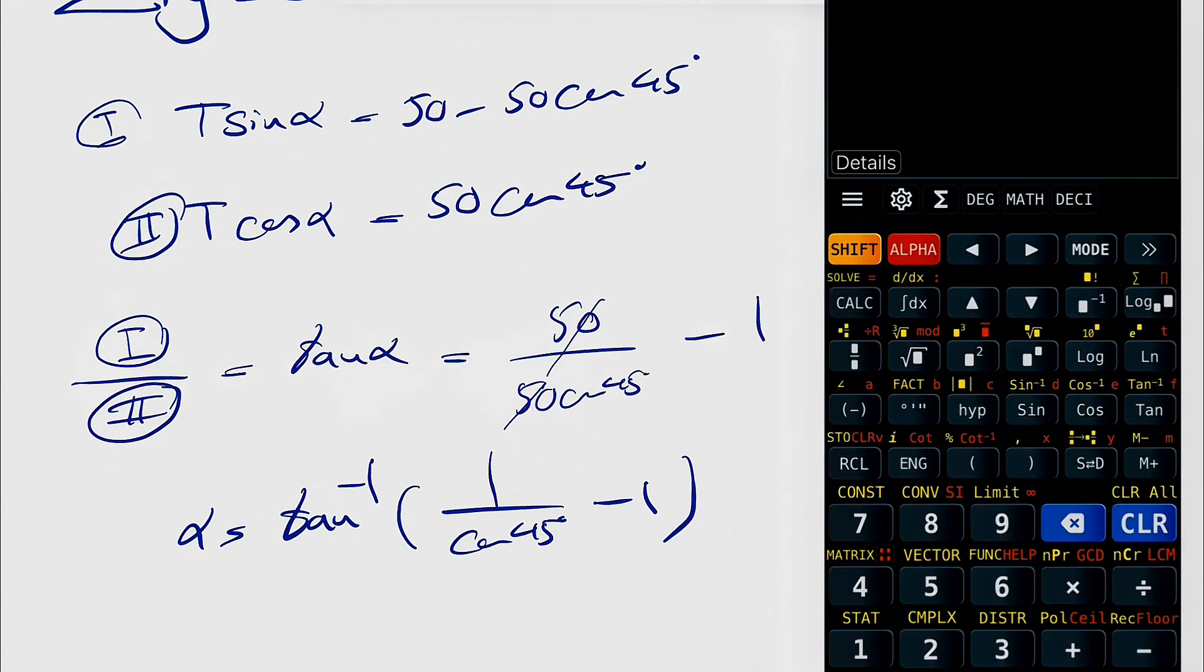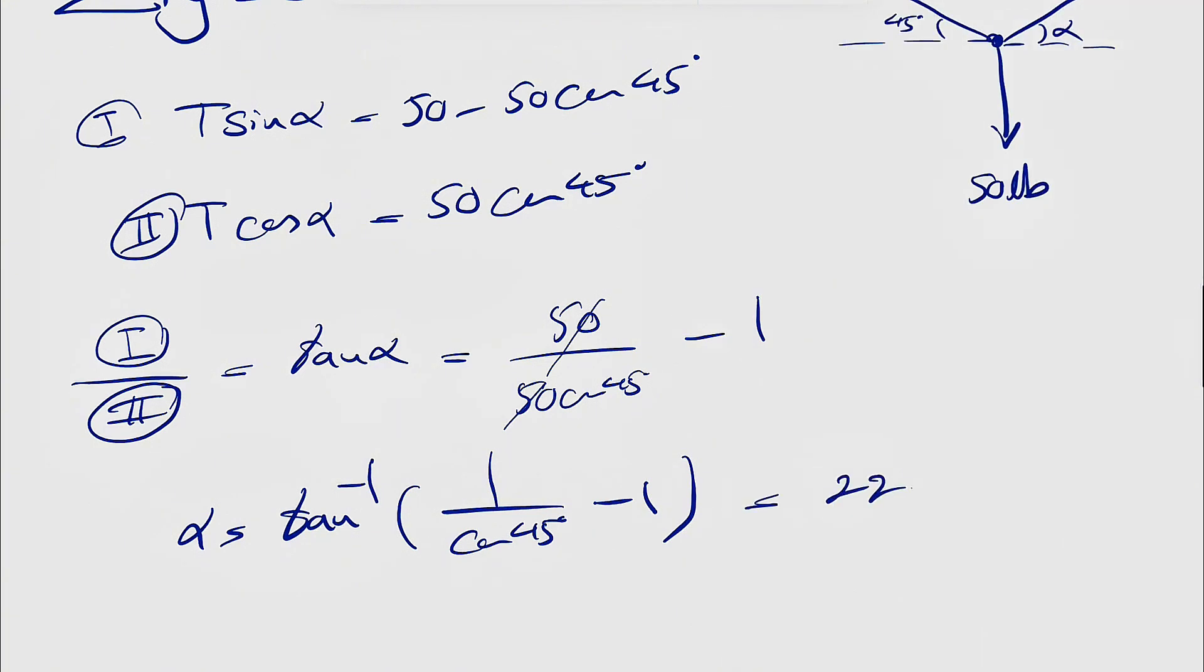Let's see what we get for that. So tangent inverse of 1 divided by cosine of 45 minus 1. And this is going to give us 22.5 degrees. So the alpha would be 22.5 degrees.